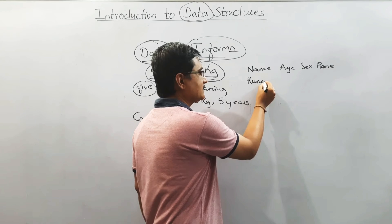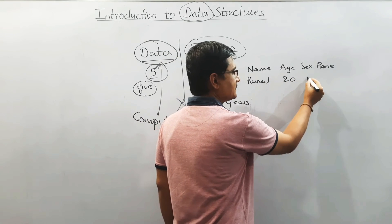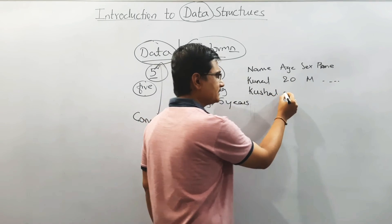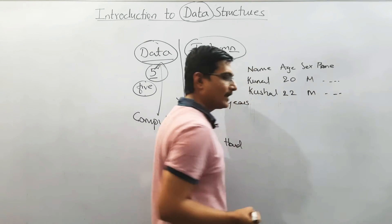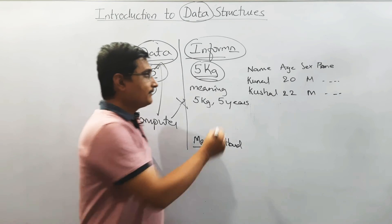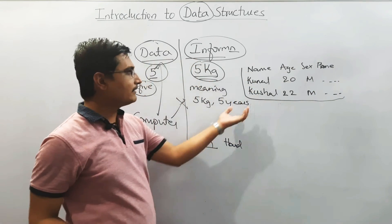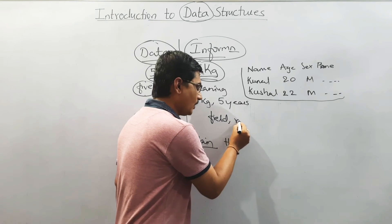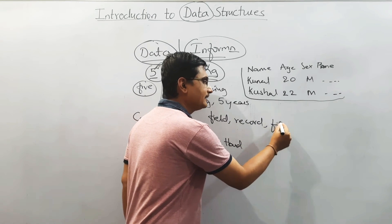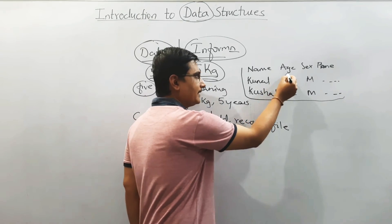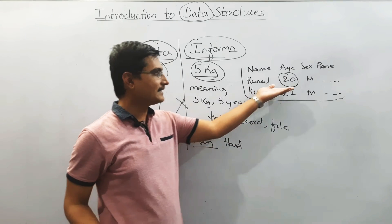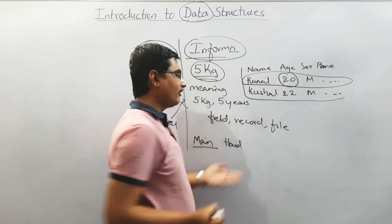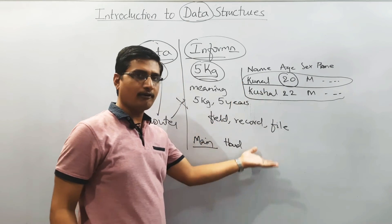Say the name of the student is Kunal, age is 20, sex is male, and phone number is some value. Another student is Kushal, age 22, male, with a 10-digit phone number. If we organize the data in this way, each individual value is a field. This whole group of data for one student forms a record.